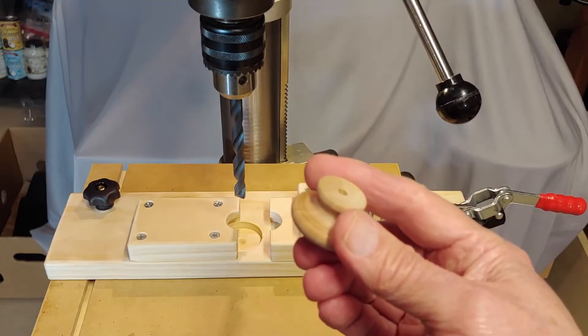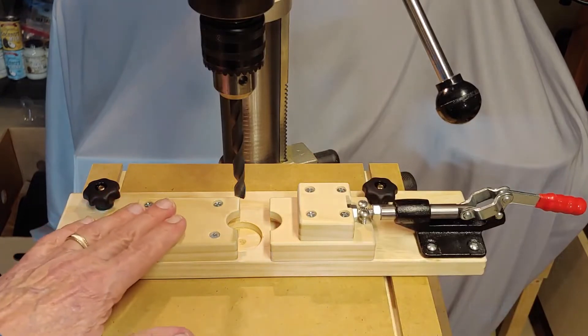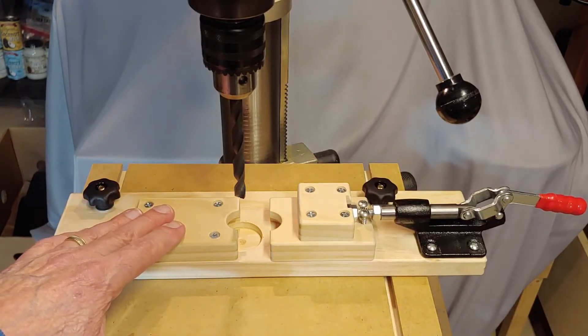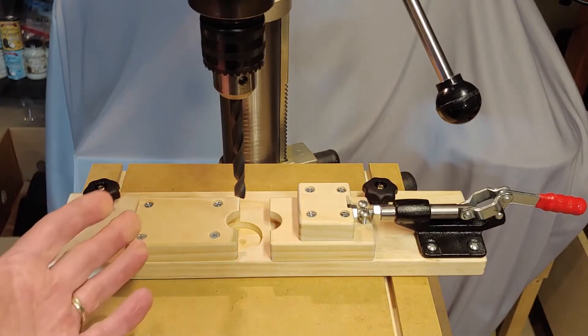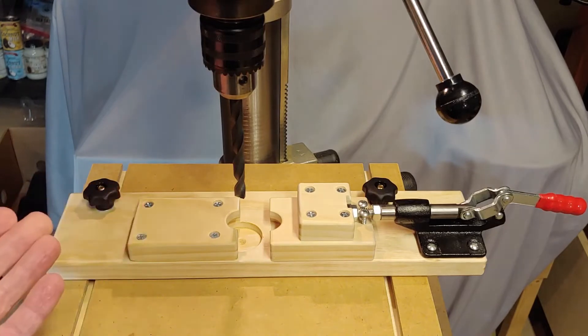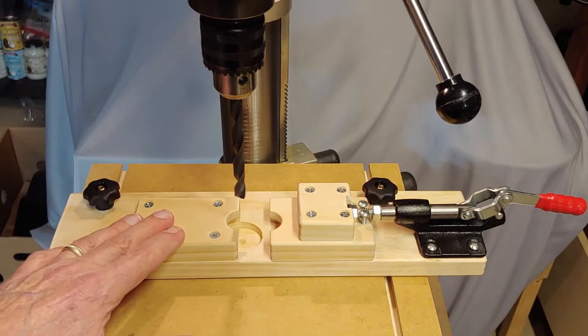Round knobs, as you might imagine, are hard to hold for drilling. This is my third generation jig for drilling a hole in a round knob. My earlier jigs did the job, but they were complicated and took too much time to use. This one is simple to use, and I can drill several knobs in just minutes.